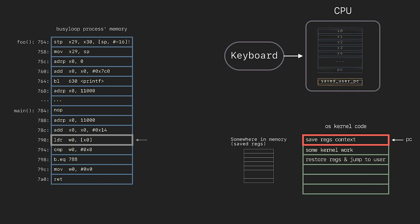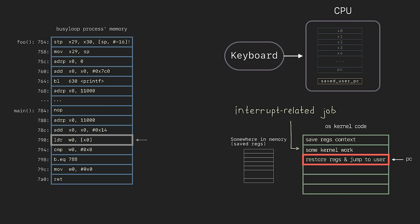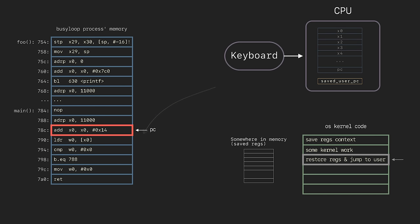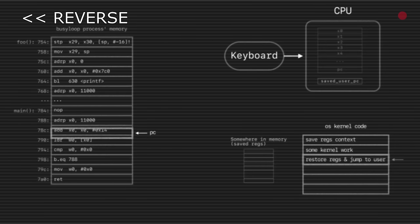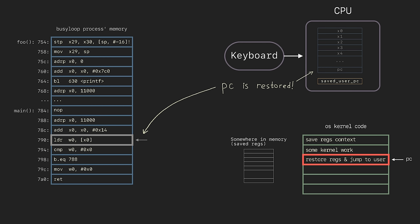The kernel entry code very carefully saves all the registers into memory. When the interrupt-related job is done, the kernel wants to resume our process execution, which just means that the kernel needs to load all the saved register values back from memory to the registers, including the saved program counter. At that exact moment, when the program counter is restored, the CPU continues the user process. Isn't it a perfect moment to replace the real program counter with the foo function address? Yes, it is. If we do that, the CPU will continue execution not from the interrupted instruction, but will jump back to the foo function — exactly what we wanted.